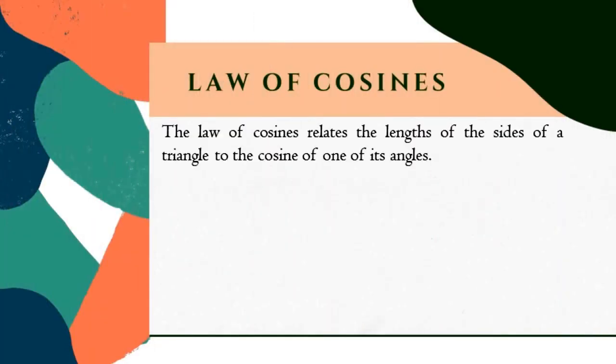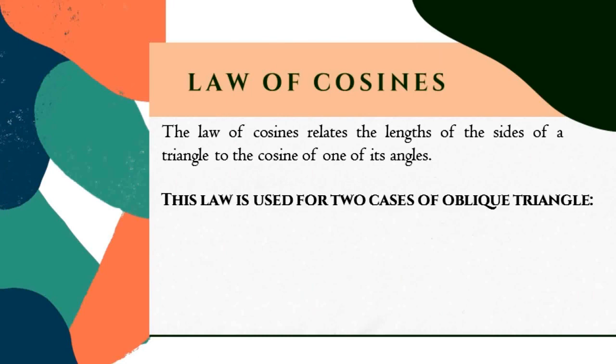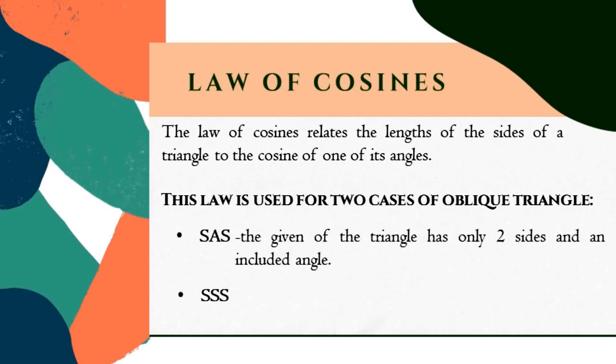In trigonometry, the Law of Cosines relates the lengths of the sides of a triangle to the cosine of one of its angles. The Law of Cosines is used for two cases of complete triangles which are the SAS and SSS. The SAS case is when the given of the triangle has only two sides and an included angle. The SSS case is when the given of the triangle has all three sides.